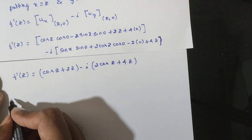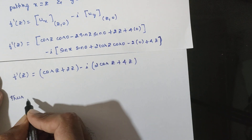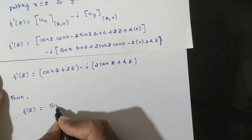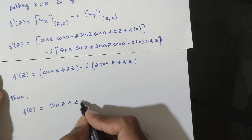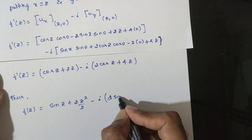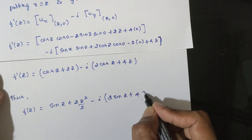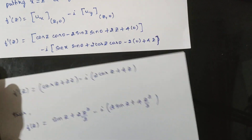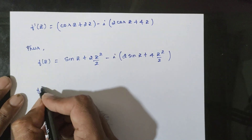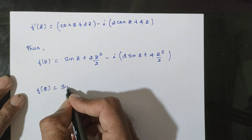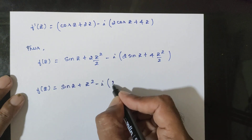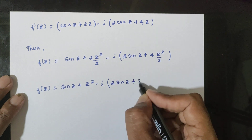Integrating term by term: cosz integrates to sinz, 2z integrates to z², and on the imaginary side 2cosz integrates to 2sinz and 4z integrates to 2z². Therefore f(z) = sinz + z² - i(2sinz + 2z²) + c.